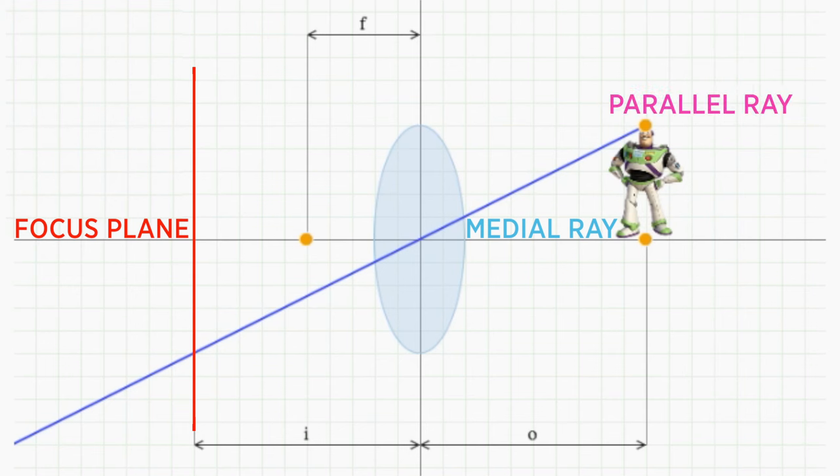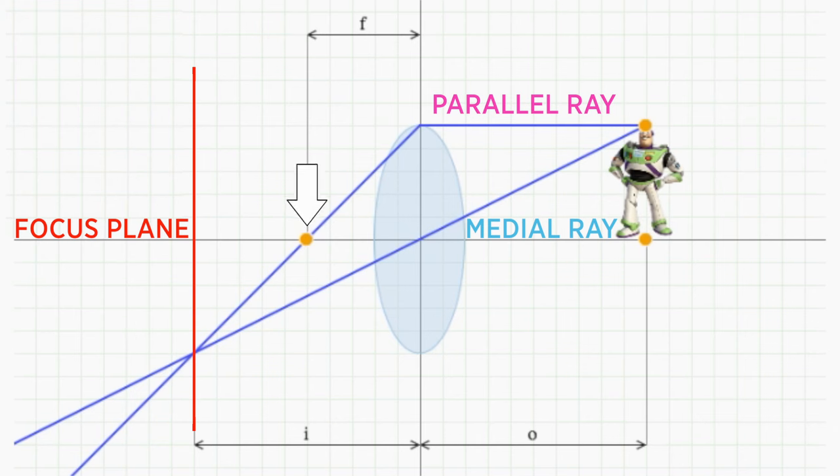And we know that parallel rays will refract as they pass through the lens and pass through the focal point of the lens. That point is a distance f from the lens on the x-axis.